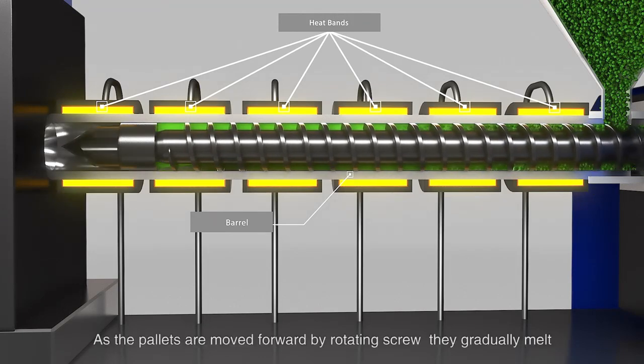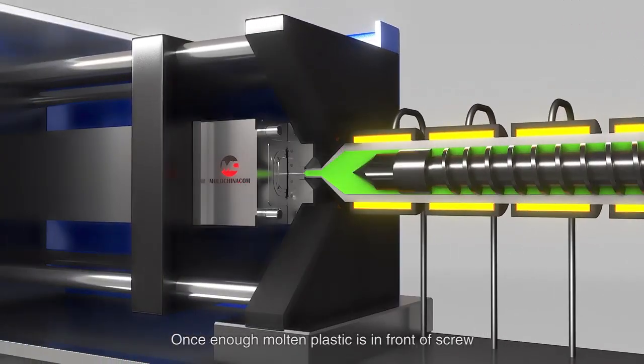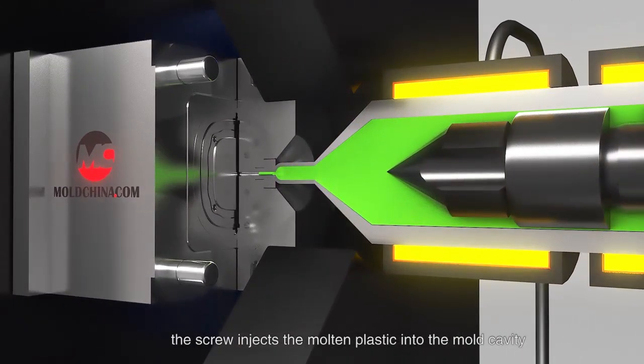As they move forward, the pellets gradually melt. Once enough molten plastic is in front of the screw, the screw injects the molten plastic into the mold cavity.